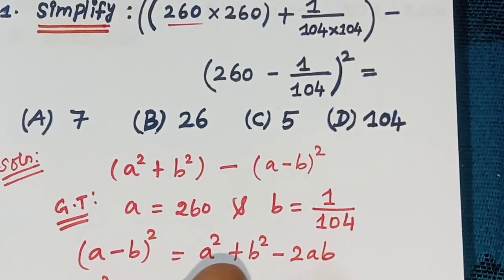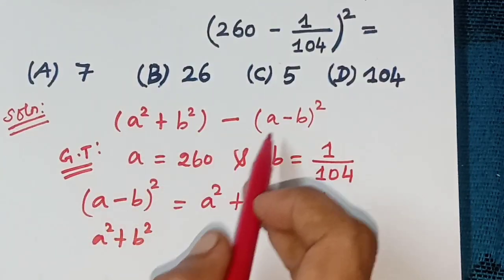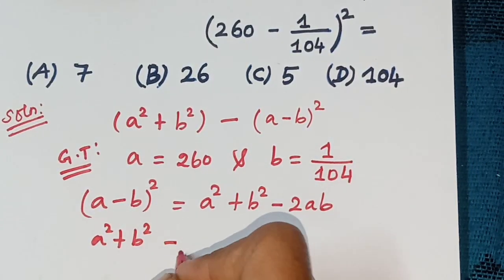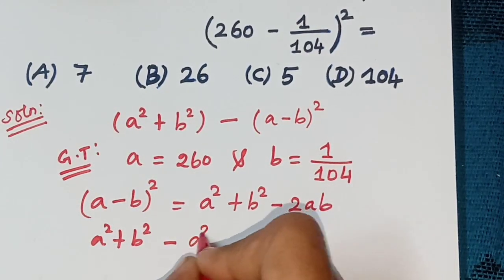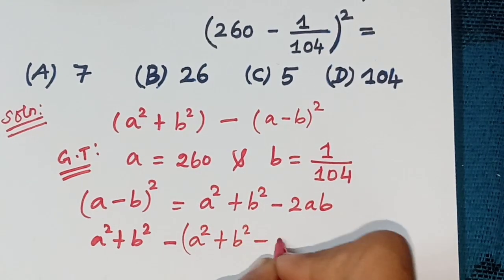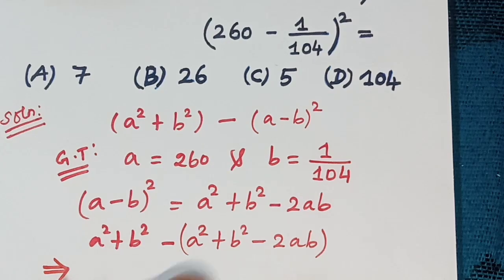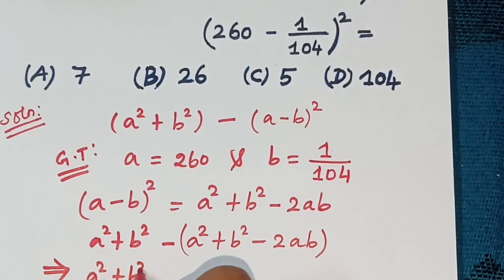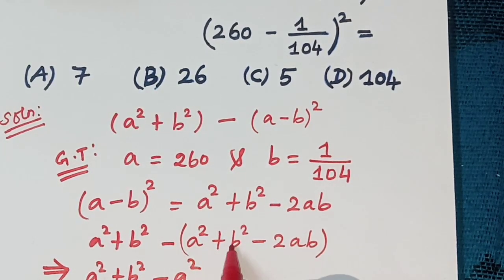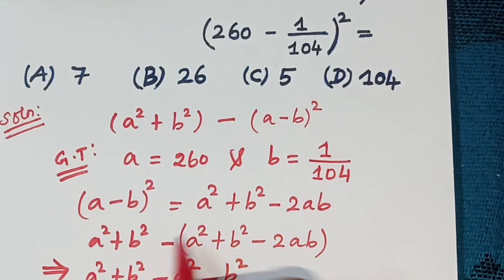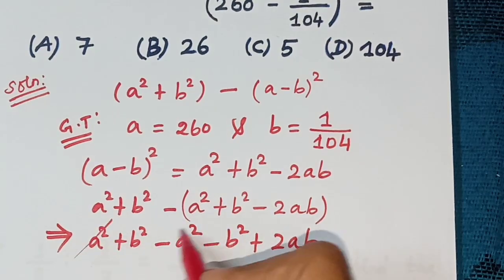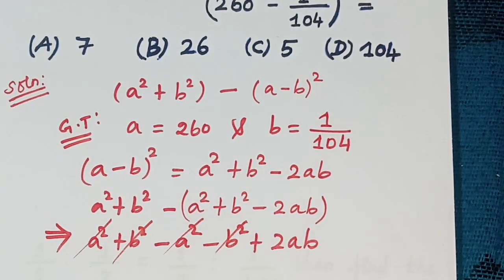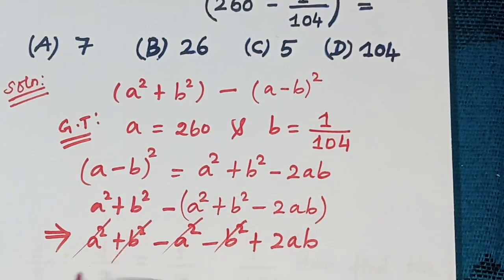Substitute the formula: A square plus B square minus (A minus B) whole square equals A square plus B square minus (A square plus B square minus 2AB). The A square and B square terms cancel, leaving 2AB.